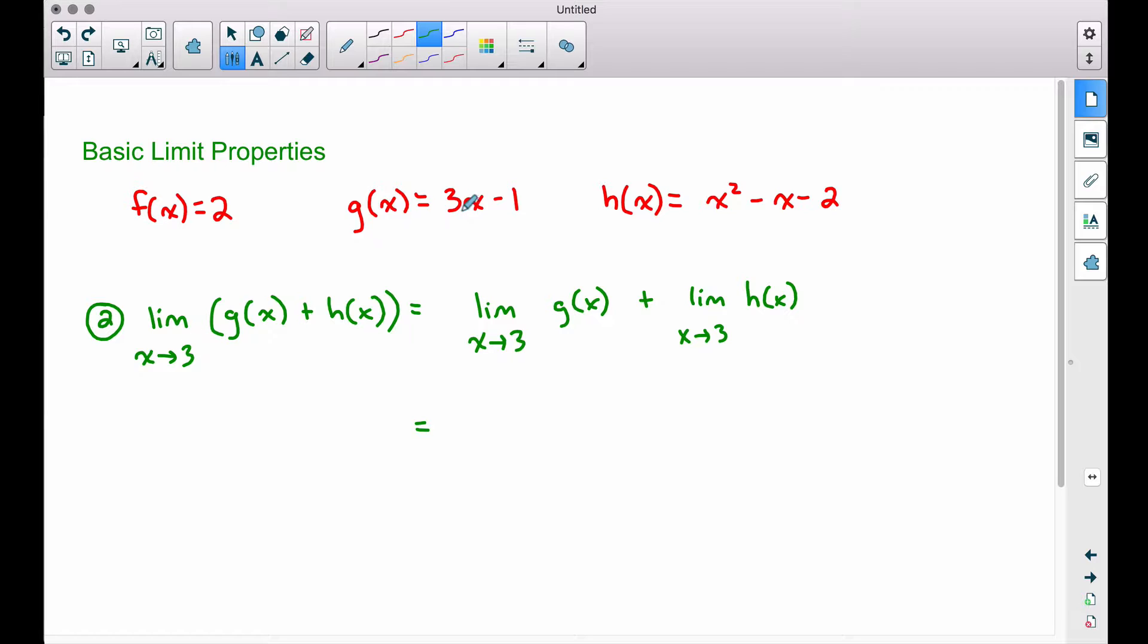Plugging in three, three times three is nine, nine minus one is eight. So we get eight when we plug three into g of x using direct substitution. Plugging in three here for h of x, three squared is nine, nine minus three is six, six minus two gives us four. So now we can add these two things together, and we get a limit of 12.